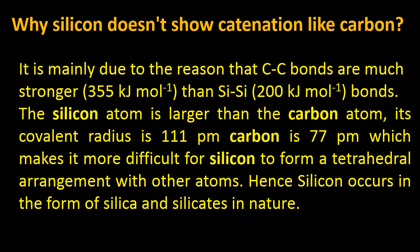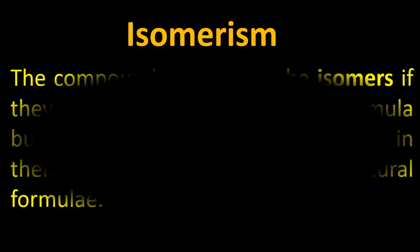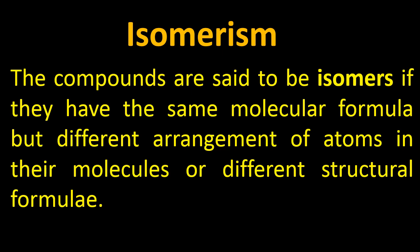That is why silicon doesn't show catenation while carbon does. The second important feature due to which organic compounds show diversity is isomerism. The word isomerism comes from 'iso' meaning same and 'meros' meaning composition. Compounds are said to be isomers if they have the same molecular formula but different structural formula. The composition is not changing, but the arrangement is changing, and this gives us diversity of organic compounds.